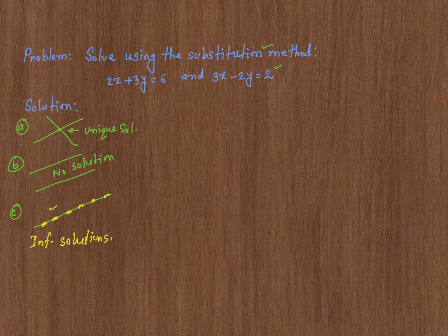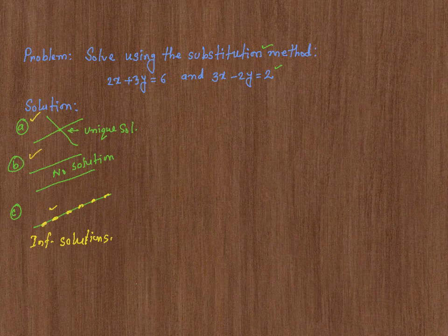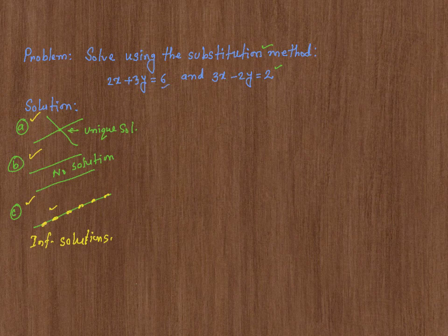Now, when we solve a system, the end result is going to be one of these three. Either it will have one solution, no solutions, or infinitely many solutions. Now, let's go ahead and solve our system and see which category it falls into. In this system, there is no x or y with coefficients 1 or negative 1, so we just have to do it the hard way.